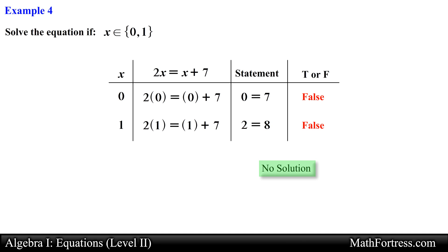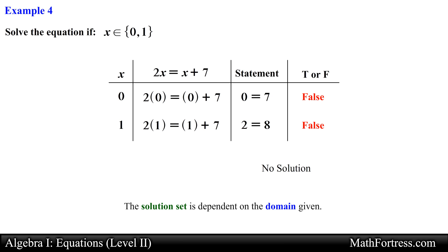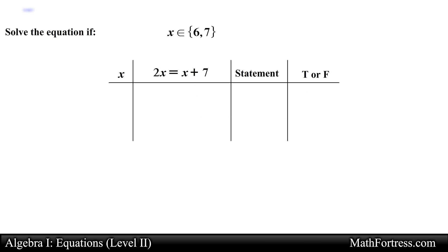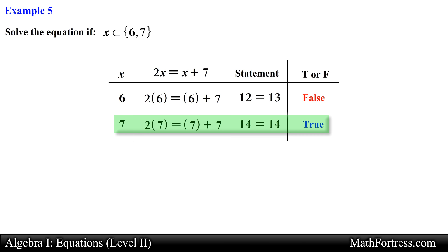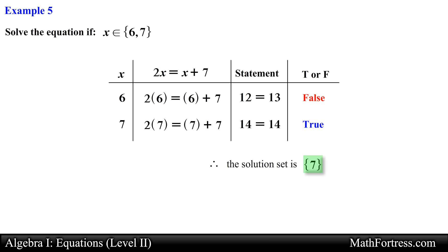The solution set is dependent on the domain given. For example, using the same equation with a different domain containing 6 and 7: substituting 6 yields 12 is equal to 13, which is false; substituting 7 yields 14 is equal to 14, which is true. Therefore the solution set is {7} for this domain.